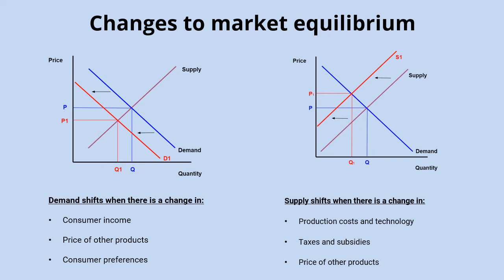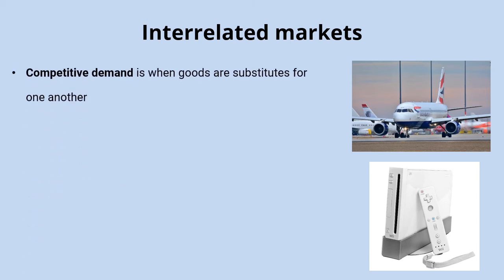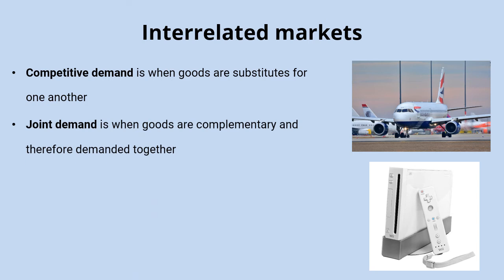While supply and demand diagrams show the situation in individual markets, these markets don't exist independently of one another. A change in one market can impact a related market. For example, goods in competitive demand — like taxis and buses — mean that an increase in the price of buses increases demand for taxis, as more people choose taxis over the now more expensive buses.